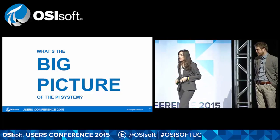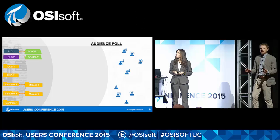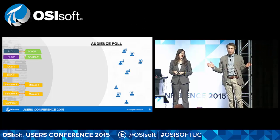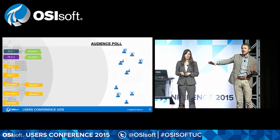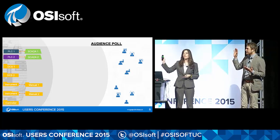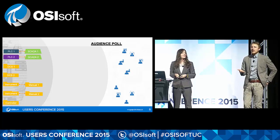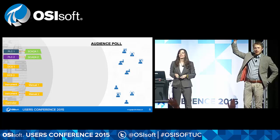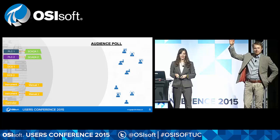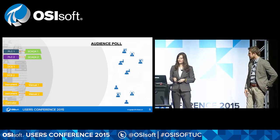We promised you the big picture of the PI system, so before we zoom in on any one spot it really helps to see it all. Often this is what our customers are starting with: on the left you have machines or sensors producing data, and on the right you have people that need to do things with it. How many people in the audience use more than two sources of data with their PI system? More than three? More than five? More than ten? So a lot of our customers use many different data sources with the PI system.